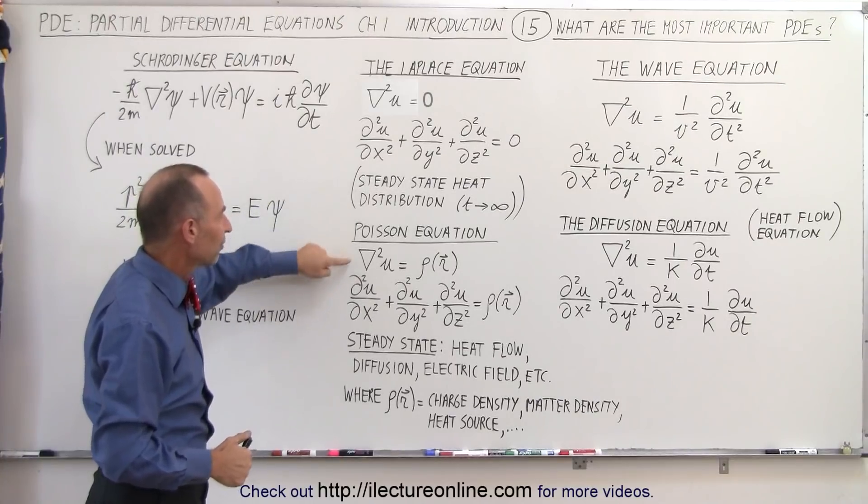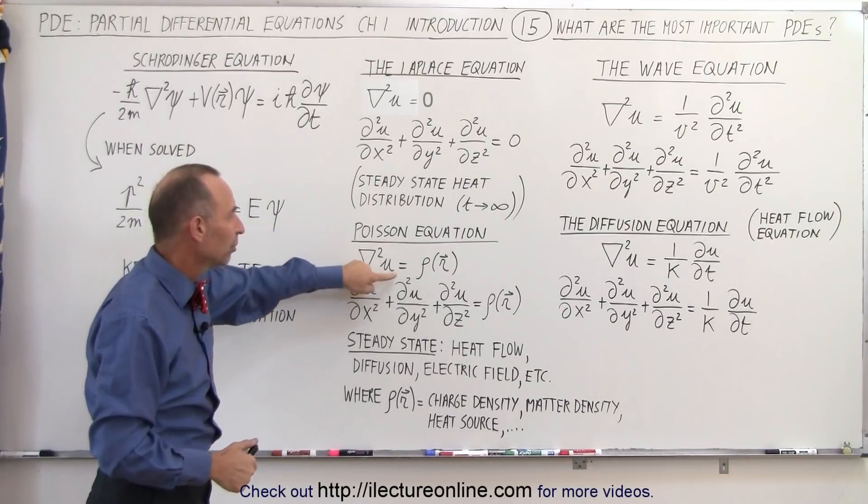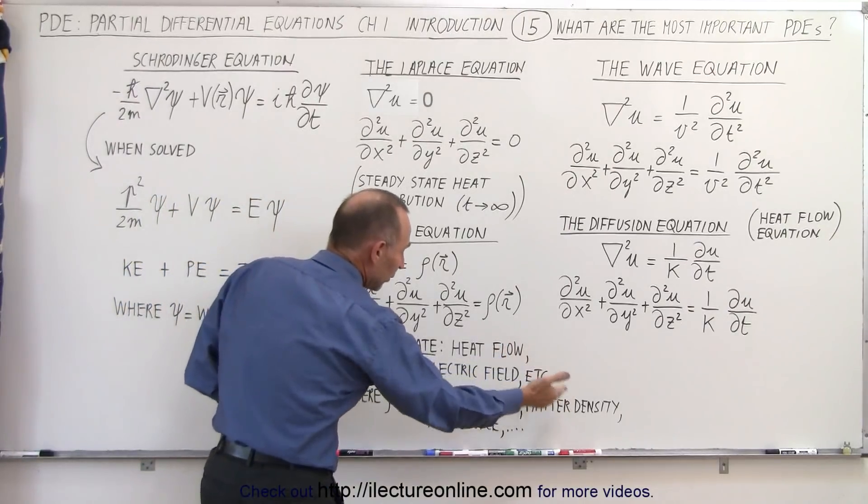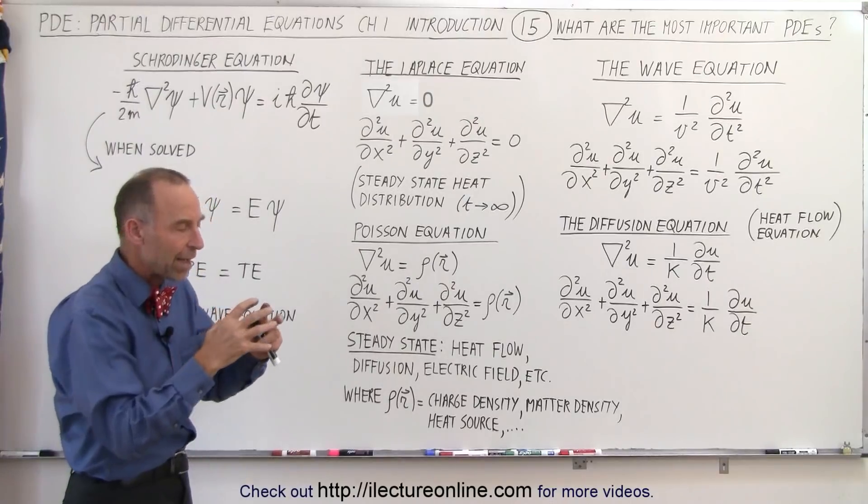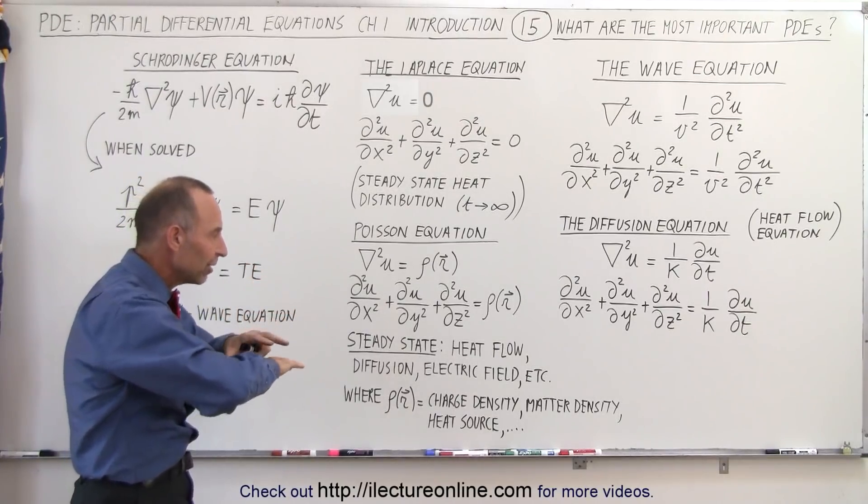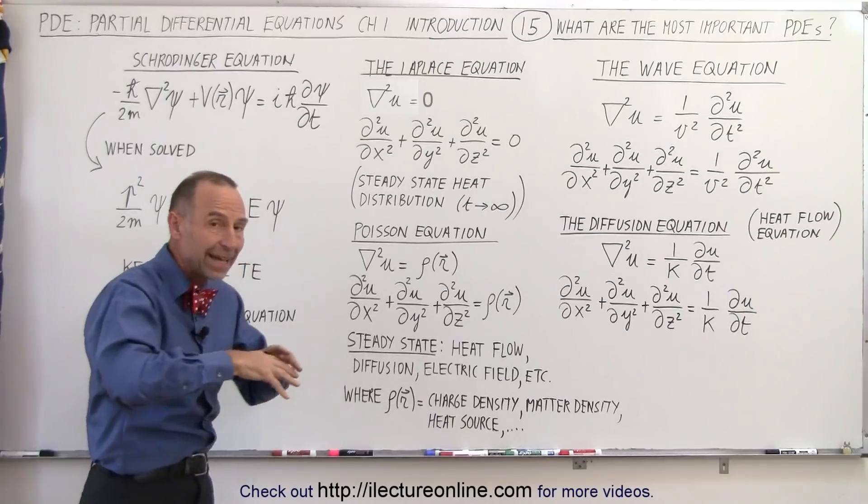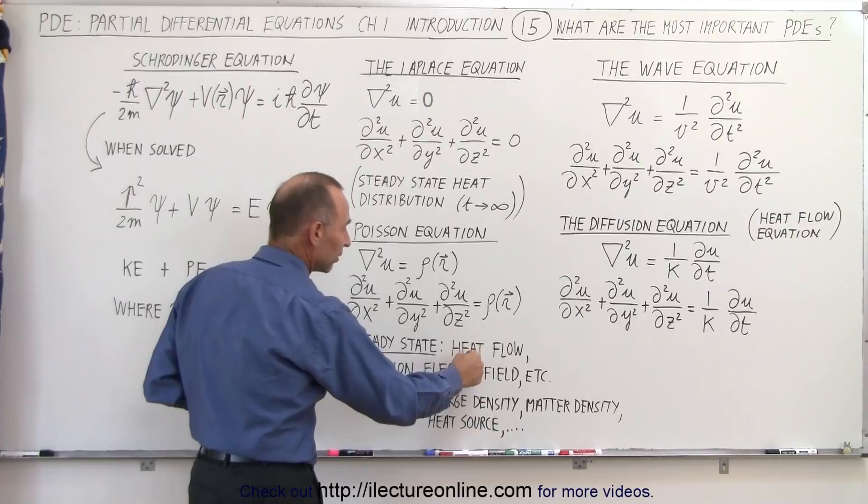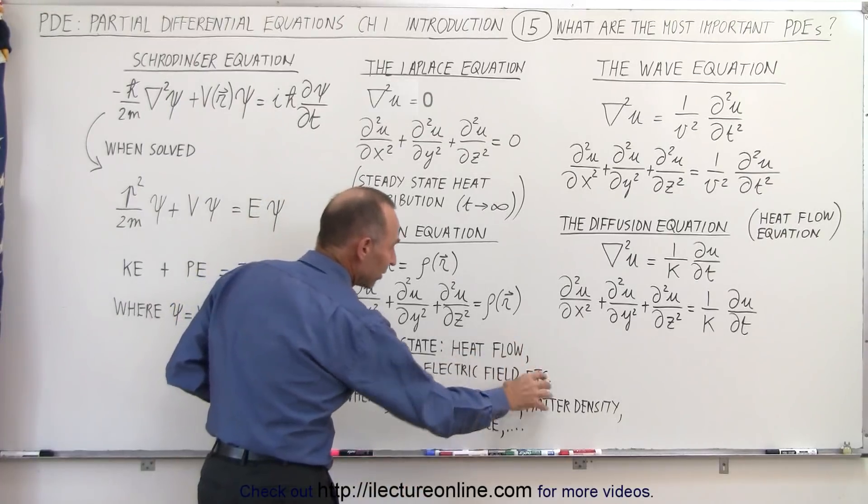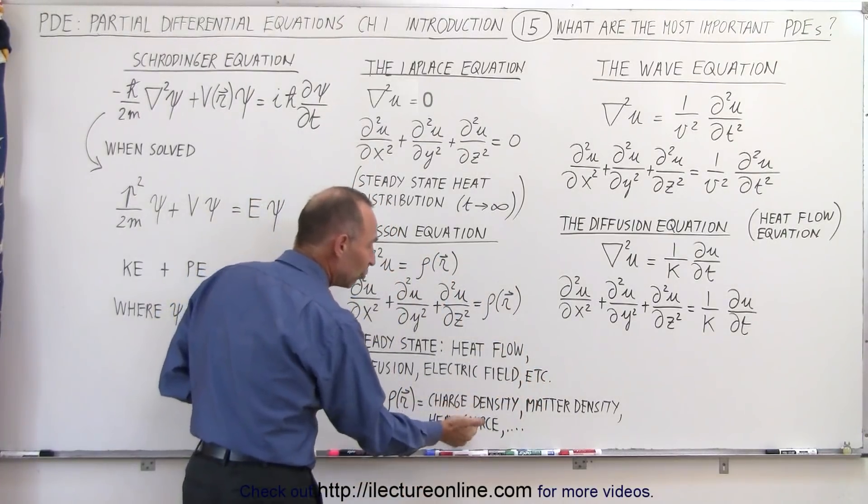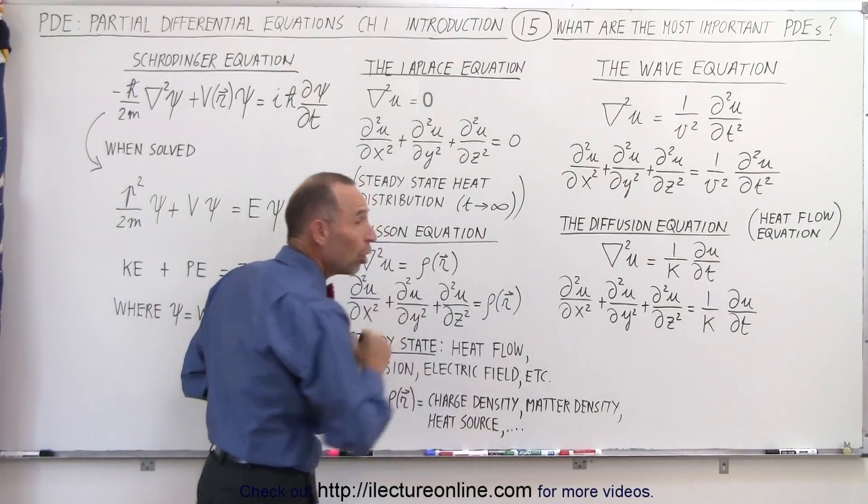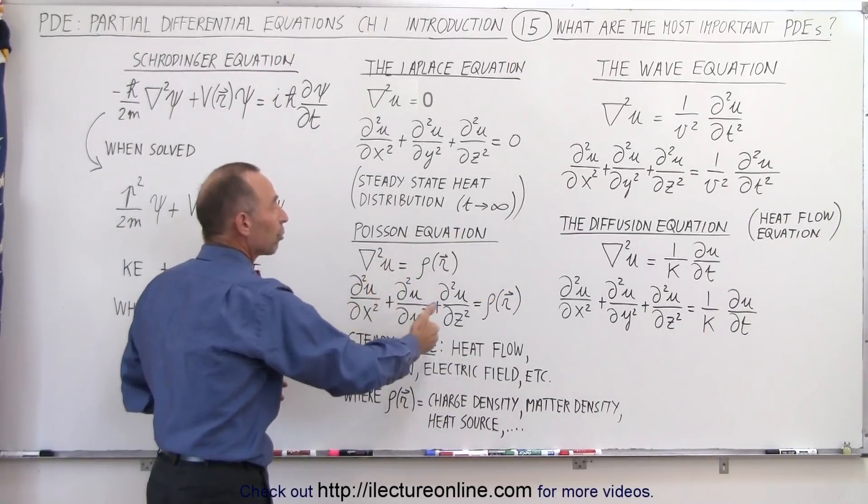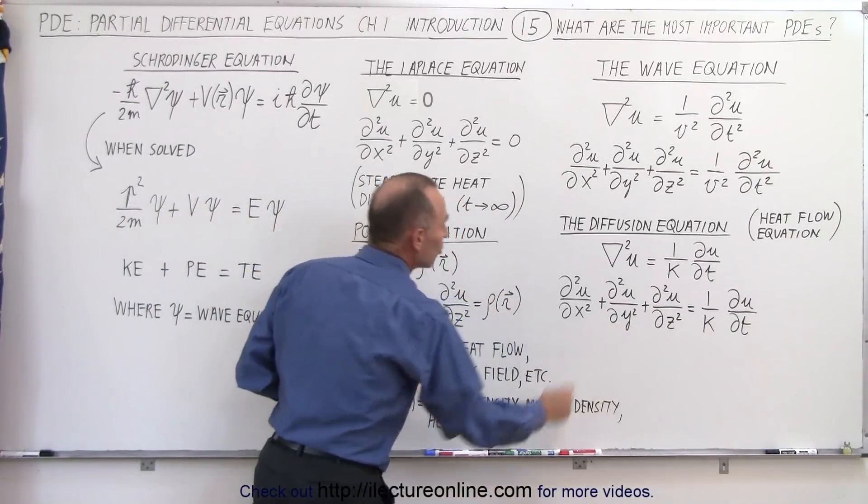The Poisson equation - again on the left side we have the Laplacian of the function, but on the right side we have a distribution of either the charge, the matter, or the heat source, or something like that. So here we have a source causing a field to exist or causing a heat flow to exist. For example, if we have a charge density, we'll have an electric field. If we have a matter density, we'll have a gravitational field. If we have a heat source, we'll have a heat flow. And if the source continues to input heat into the region, then this equation is appropriate rather than using the diffusion equation.